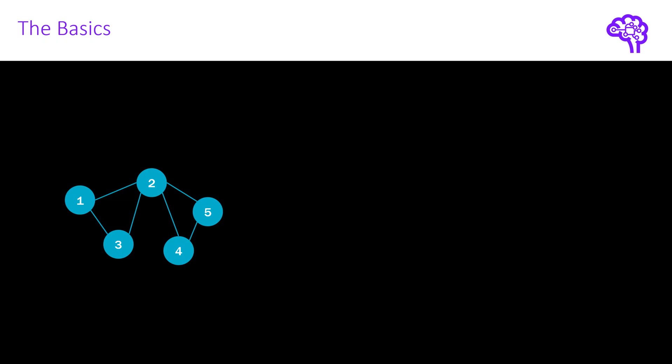So let's start with the basics. For a graph like the one shown here, each node can be described with a node feature vector. For a molecule, this feature vector would contain information about the atoms. For a social network, attributes about a person, for instance.